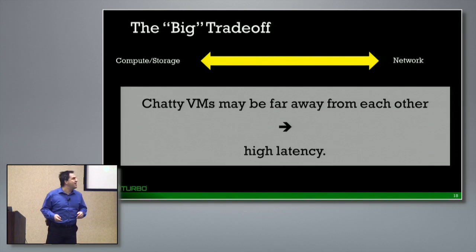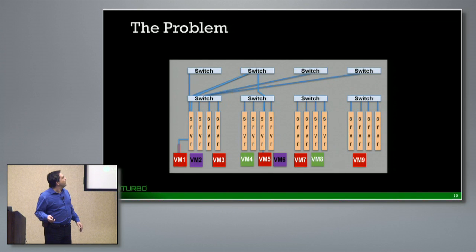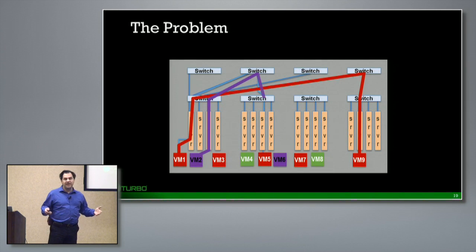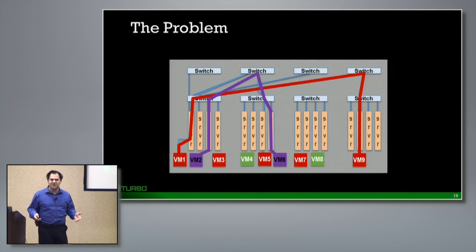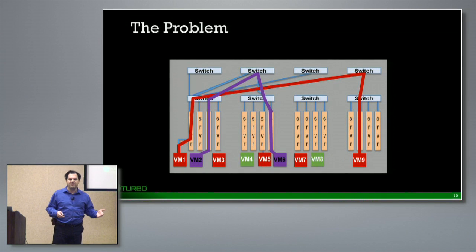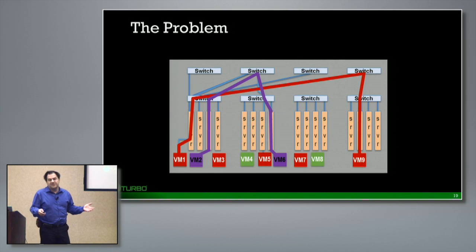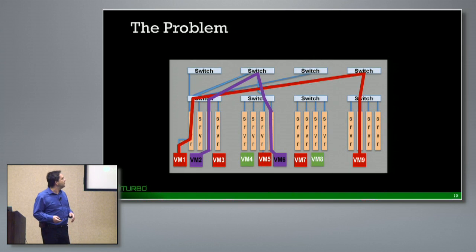Basically, if you put VMs that are chatty far away from each other, you experience high latency. And typically, if you just look at any randomly deployed set of VMs in the environment, it's really hard to predict which application is going to talk to which other application. So if you look at the network flows in your environment, they are going across your spine switches, across the leaf switches, and some by chance may be on the same host, but then they may not be able to get compute and storage resources.